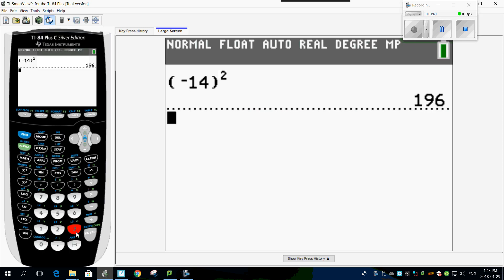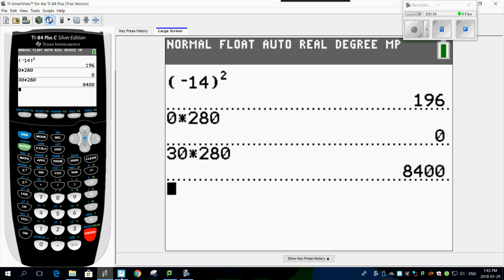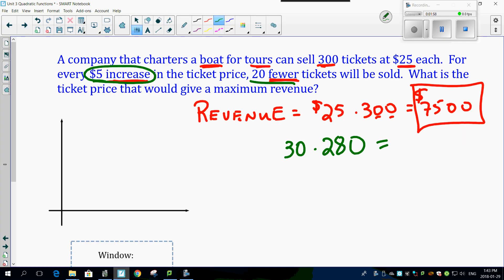I'll bring up the calculator here. 30 times 280 tickets works out to be $8,400. Wait a second. Holy smokes, I made a whole heck of a lot more money. Sure, I've got a few empty seats, but I made $900 more just by charging an extra five bucks. So I got 20 empty seats, but I've got a whole bunch more money. And as a business person, that's exactly what you're in for.